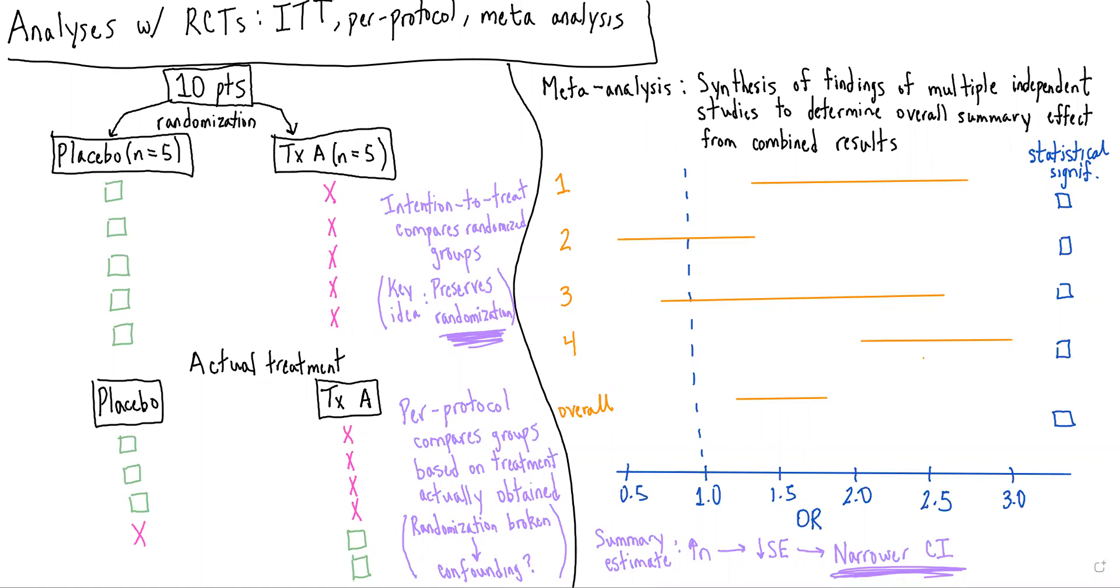So starting out with the types of analyses and comparing and contrasting intention-to-treat with per-protocol, let's start with this fictitious setup of a randomized clinical trial of 10 patients where five patients are randomized to placebo, five patients are randomized to treatment A.